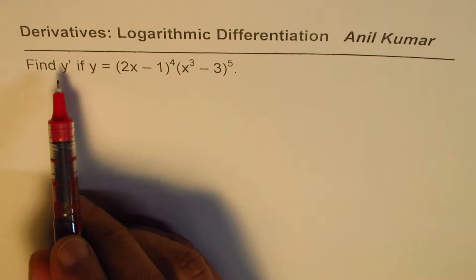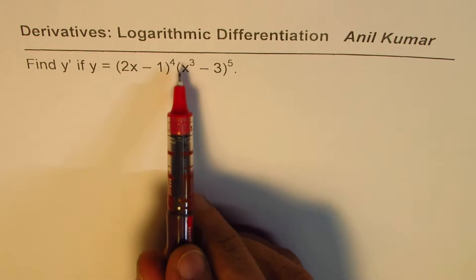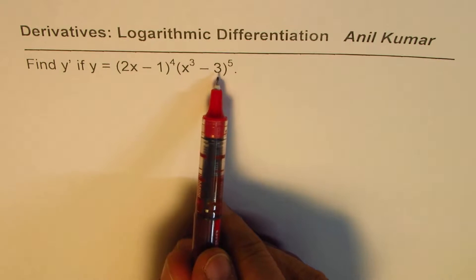We need to find the derivative of the function y equals (2x - 1)^4 times (x^3 - 3)^5.